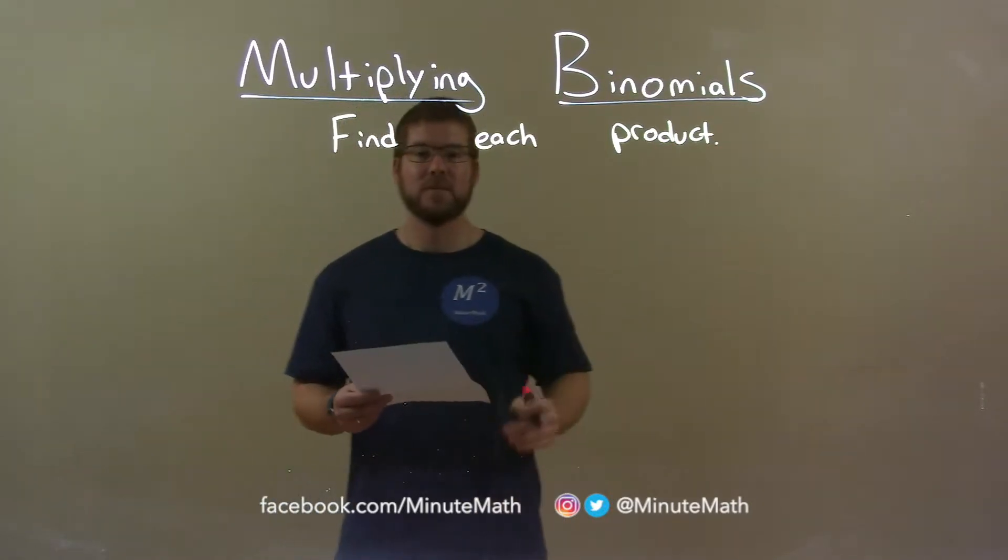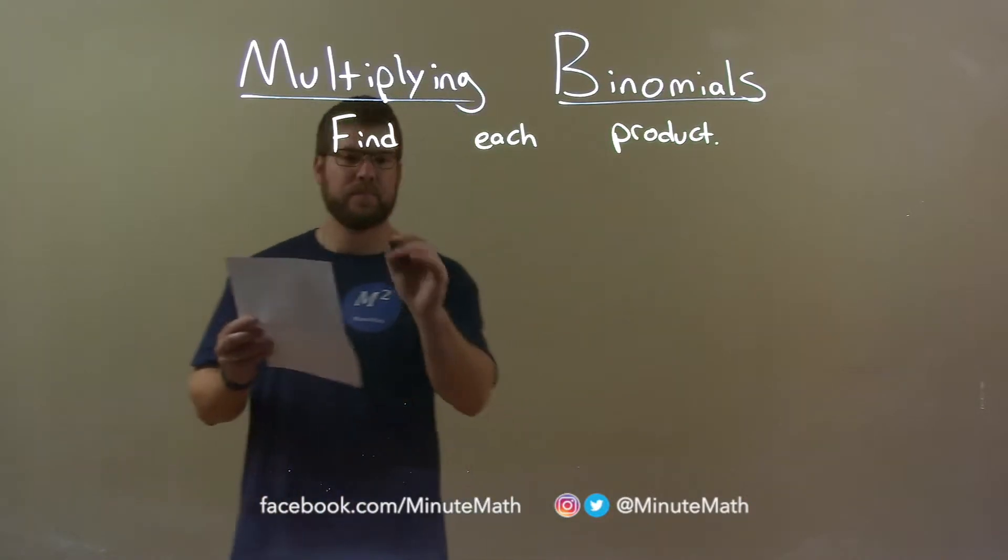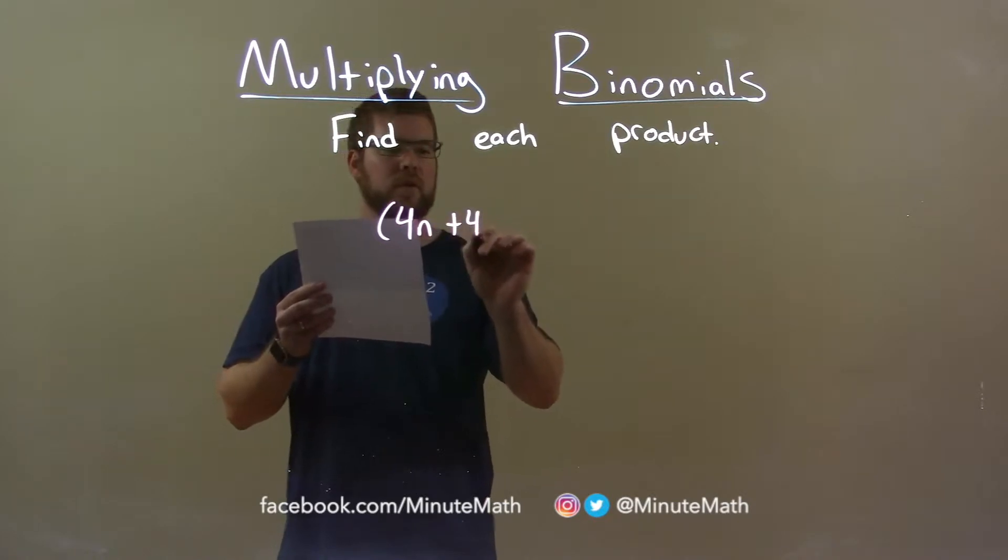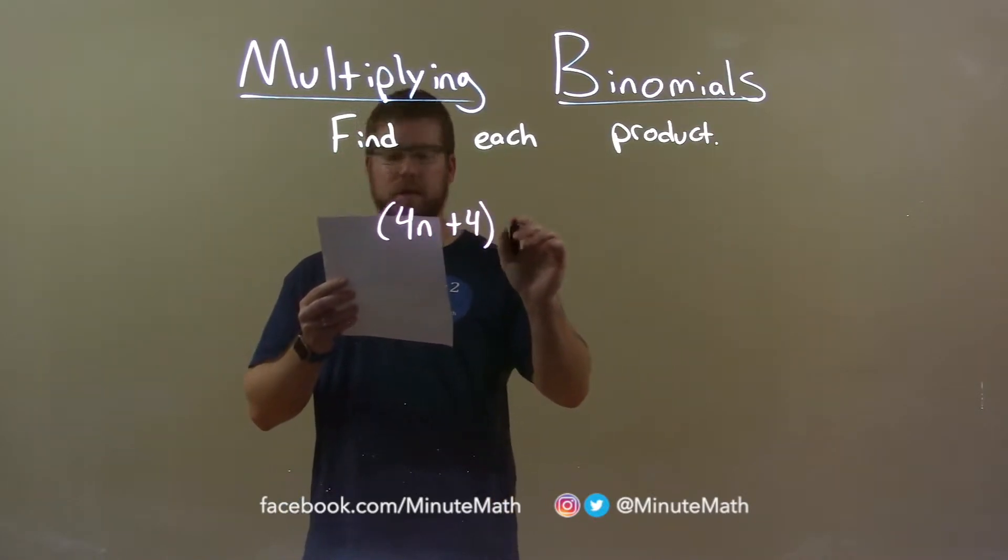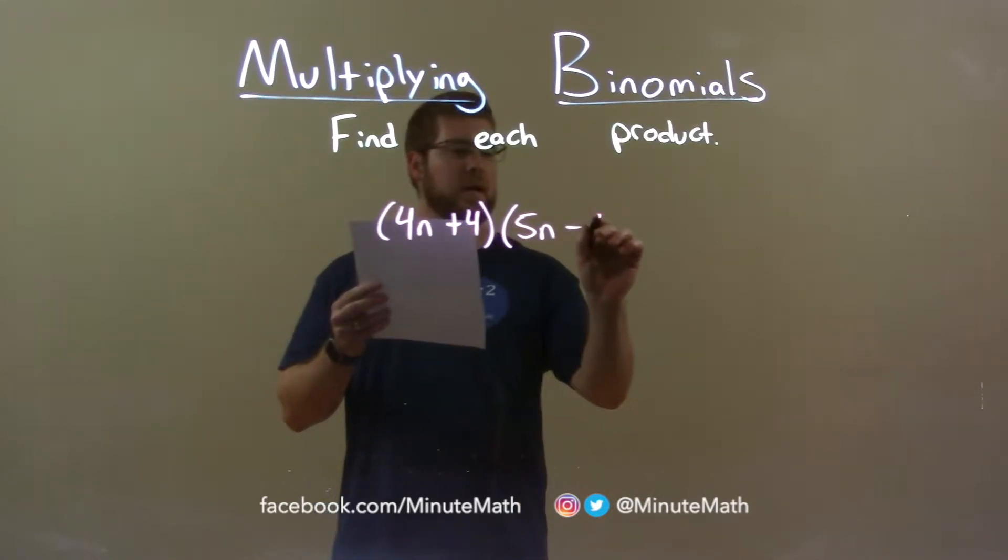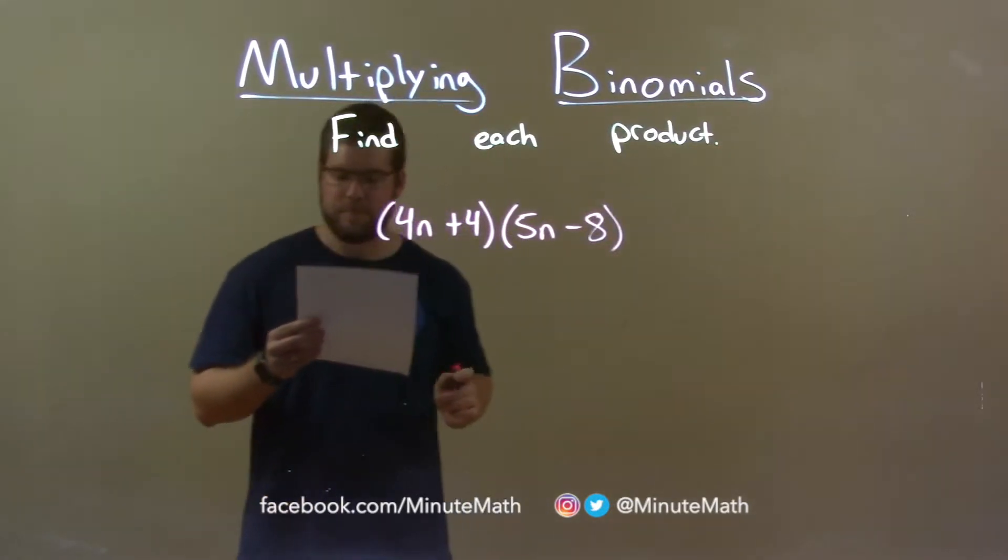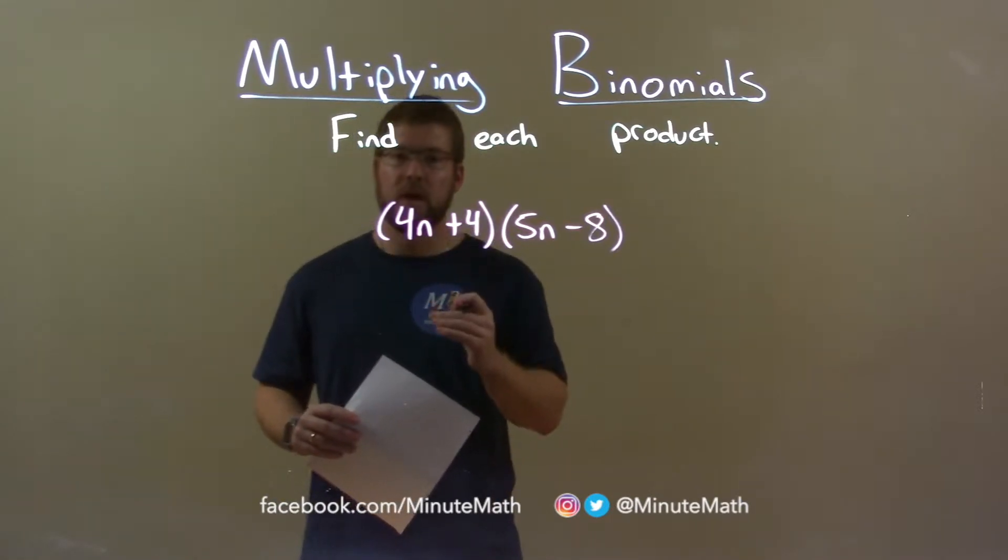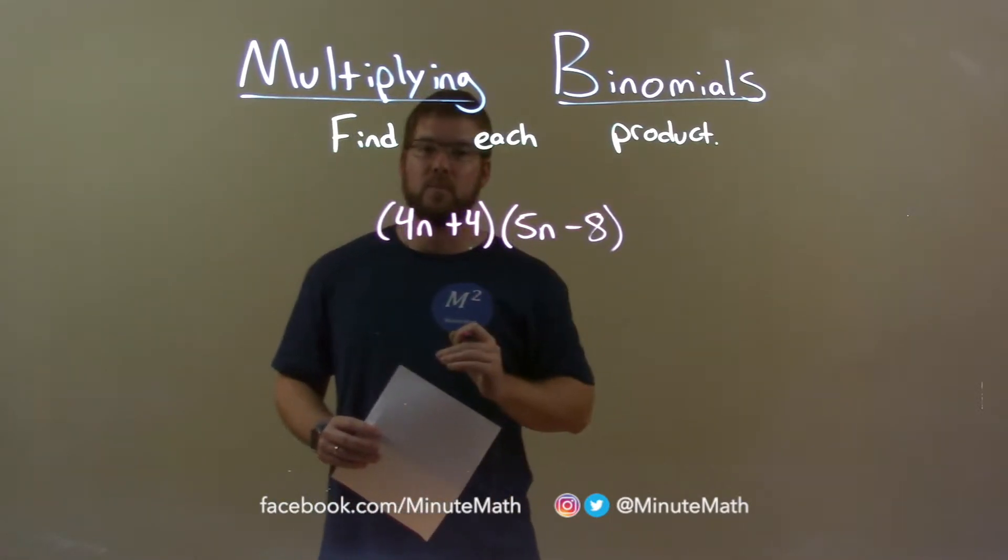So, if I was given this product, 4n plus 4 multiplied by 5n minus 8, we want to take all parts of our first parenthesis and multiply it by all parts of our second parenthesis.